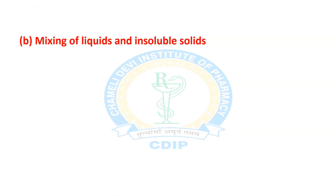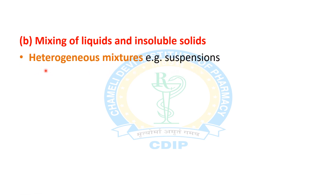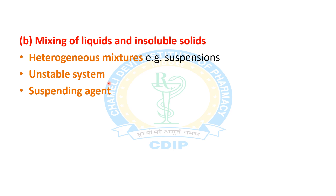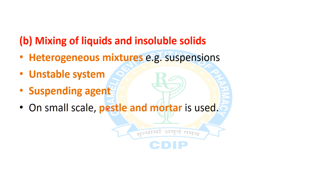The next is mixing of liquids with insoluble solids, which gives a heterogeneous mixture. An example is suspension. This type of mixture is unstable because when the suspension is allowed to stand for some time, the ingredients will separate out. To prevent that, a suspending agent needs to be added to the system to make the suspension stable. On a small scale, mortar and pestle are used.